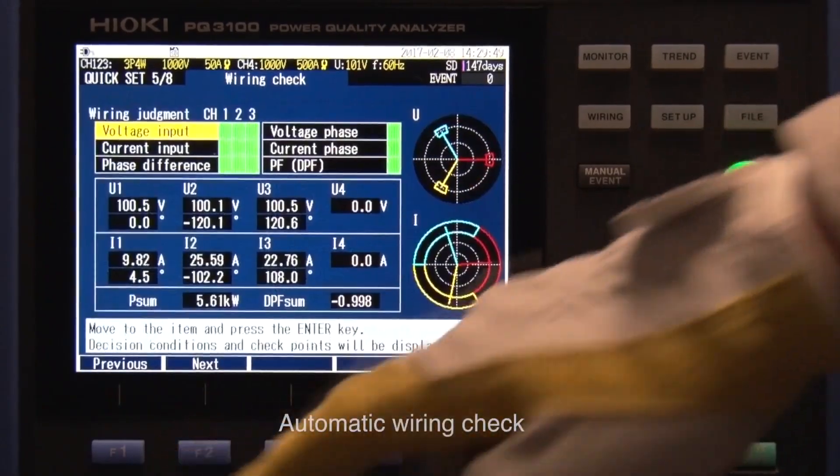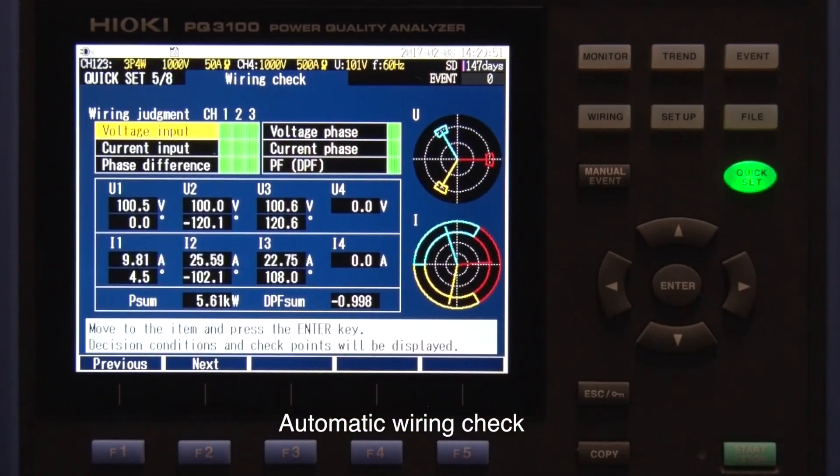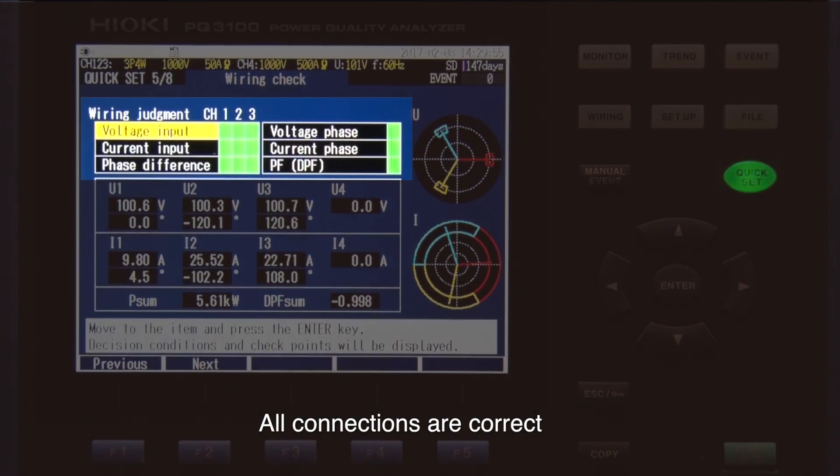The PQ3100 automatically checks for correct wiring and warns you if there is an error. This shows that all connections are correct.